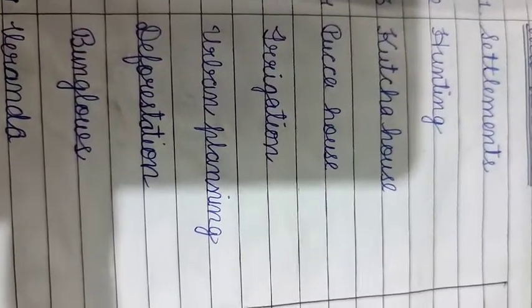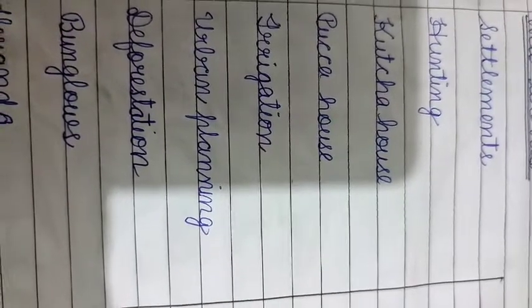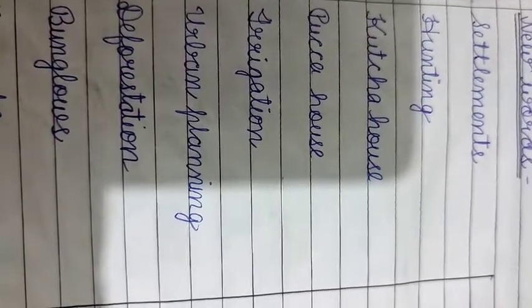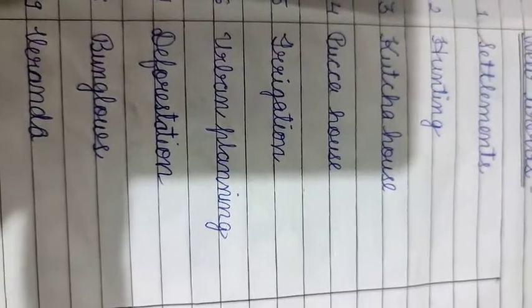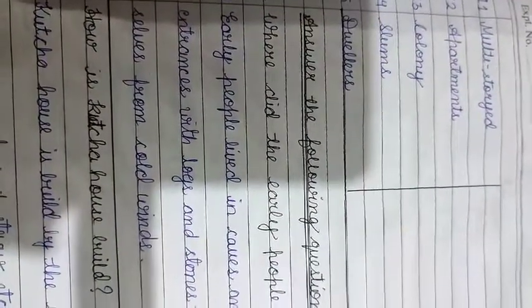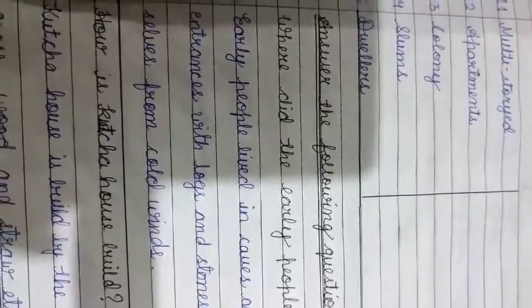Again I am repeating new words, students. First one: settlement. Second one: hunting. Third one: katcha house. Next one: paka house. Next one: irrigation. Next one: urban planning. Next one: deforestation. After that: bungalows, then veranda, then multi-storied, then apartments, then colony, next one slums, and last: dwellers.